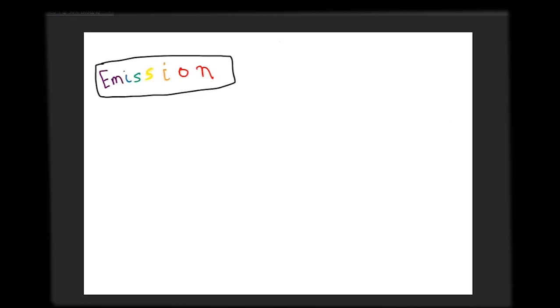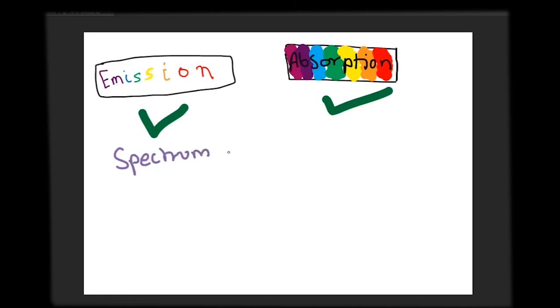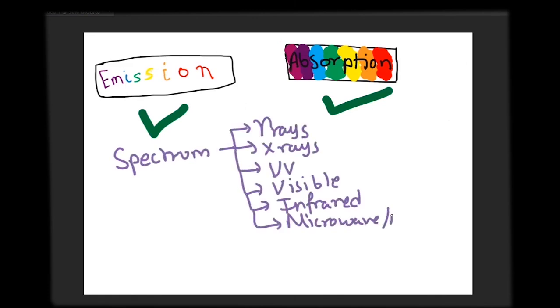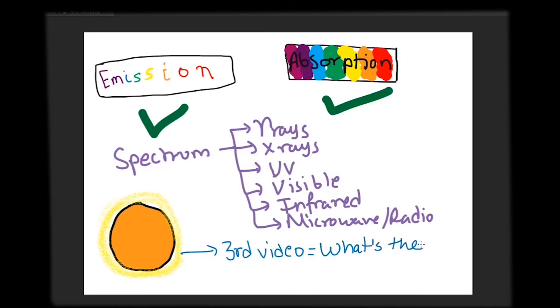So, this was all regarding the basics of emission and absorption spectrum. In the study of them, spectra of invisible parts of the electromagnetic spectrum are also analyzed. In the third video of this series, we shall see how this knowledge helps us identify and discover elements on celestial bodies.